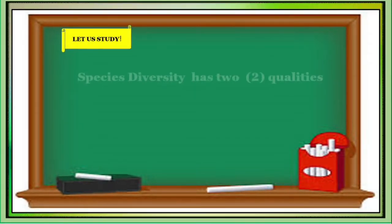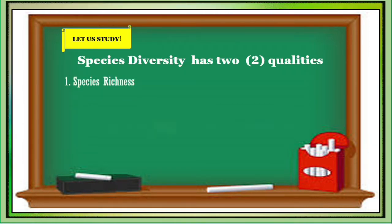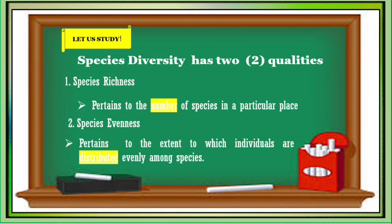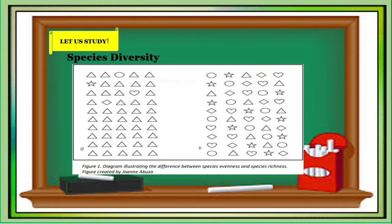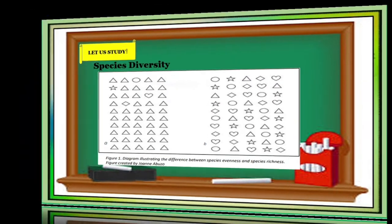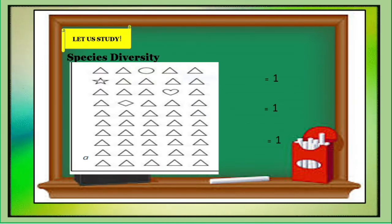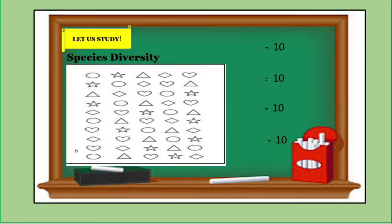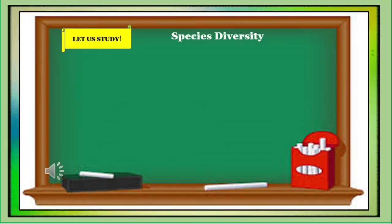Species diversity has two qualities. One: species richness — pertains to the number of species in a particular place. Two: species evenness — pertains to the extent to which individuals are distributed evenly among species. Imagine two ecological communities, each with five species and 50 individuals. In the first community, Community A, 46 individuals belong to a single species and the remaining four species are represented by one individual each. In the second community, Community B, all species are equally abundant, each having 10 individuals.